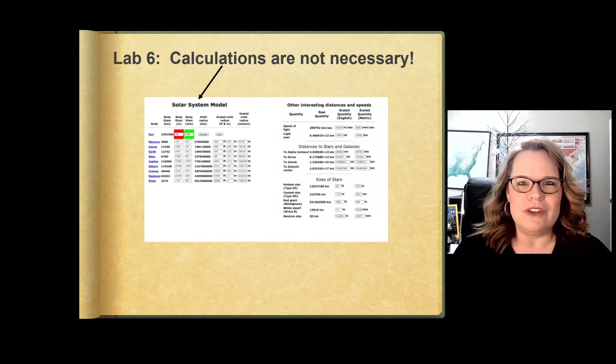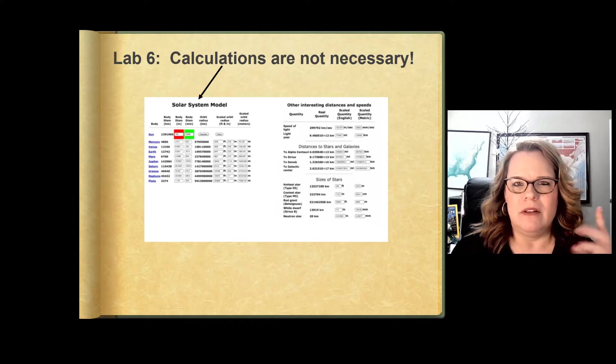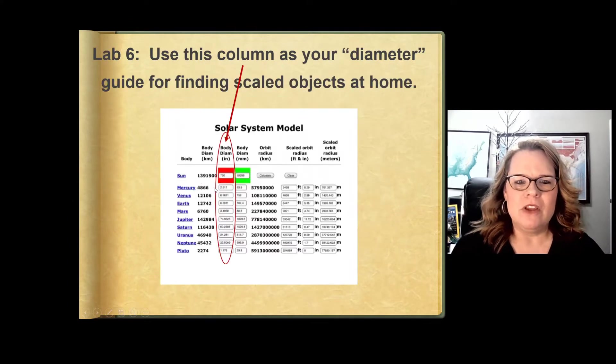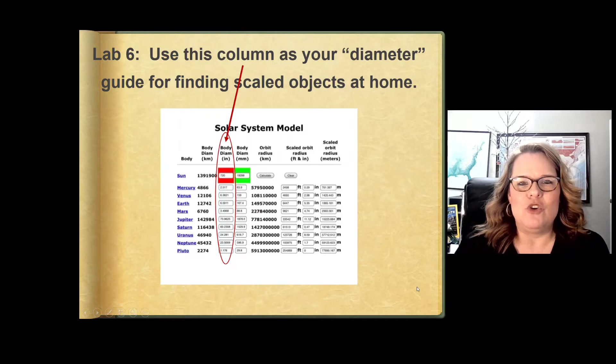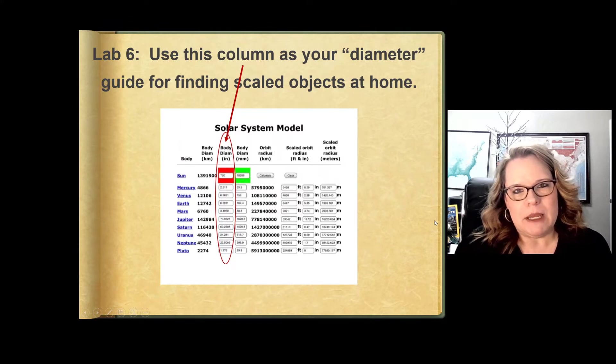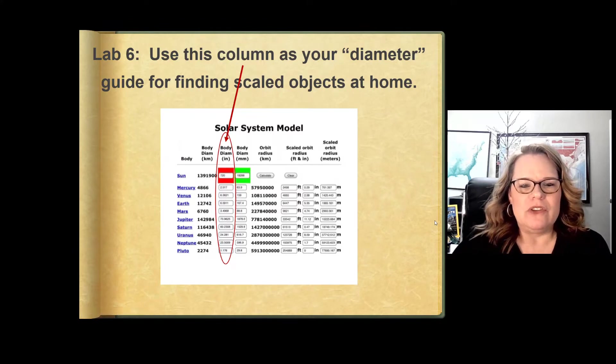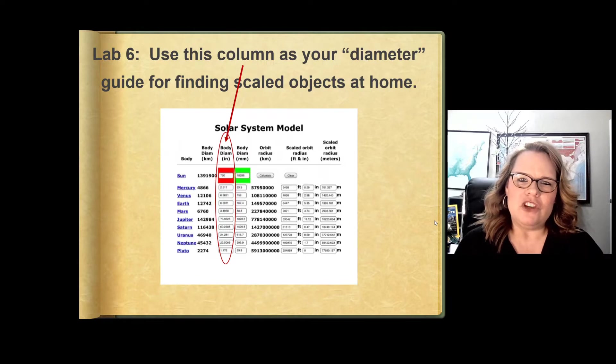So what do you do once you've entered this into the table you see right here, this interactive table? You're going to take that data and you're going to use this column right here, the body diameter in inches, not in millimeters. If you do it in millimeters, everything's going to be microscopic. You need to use inches.